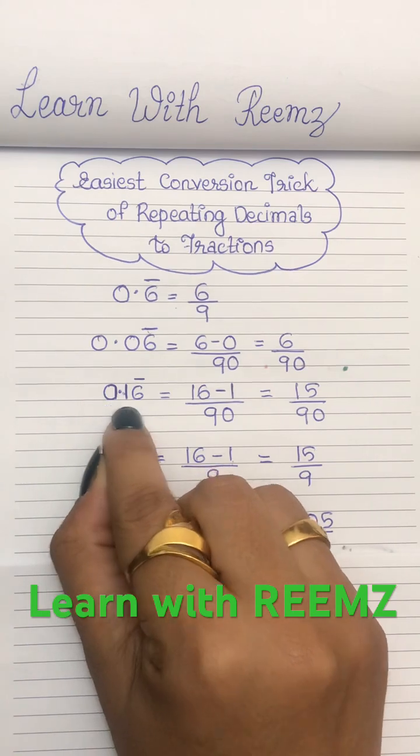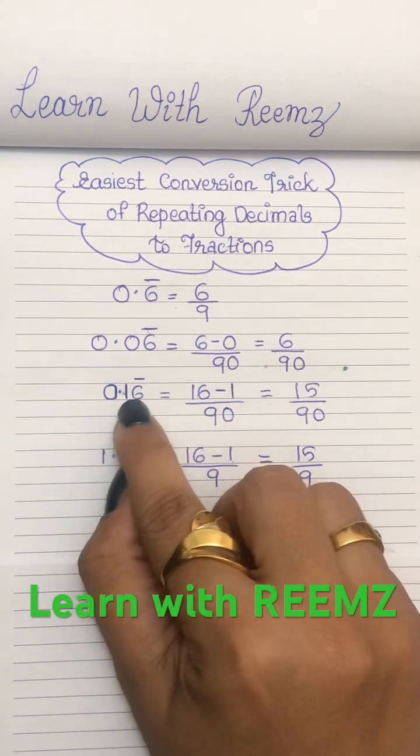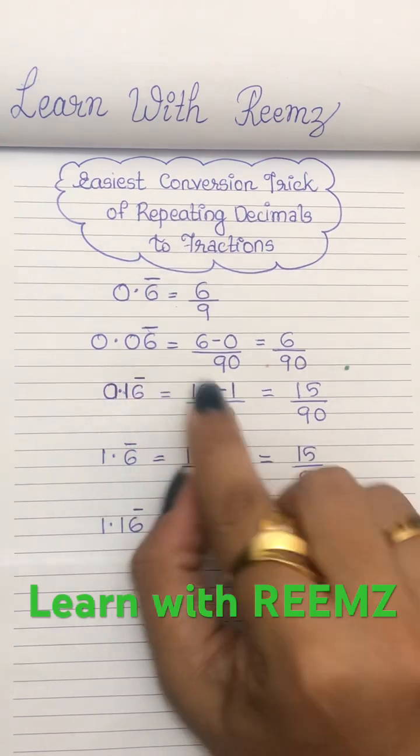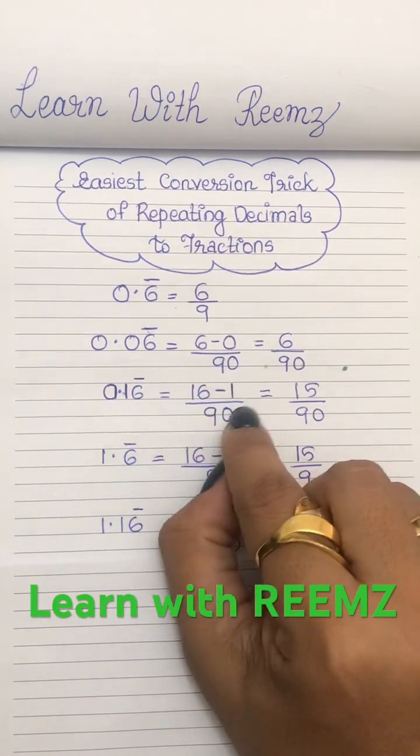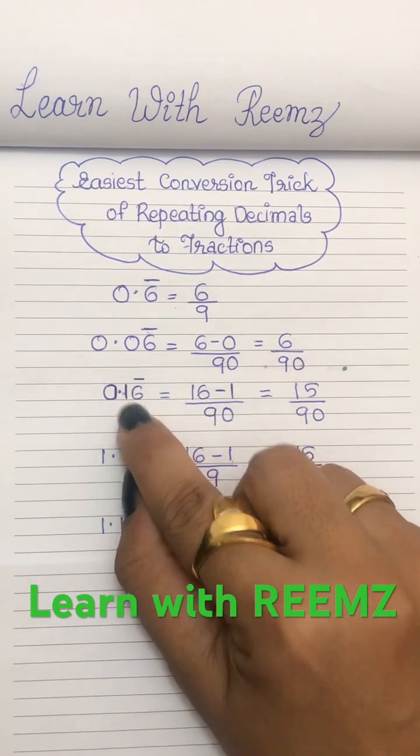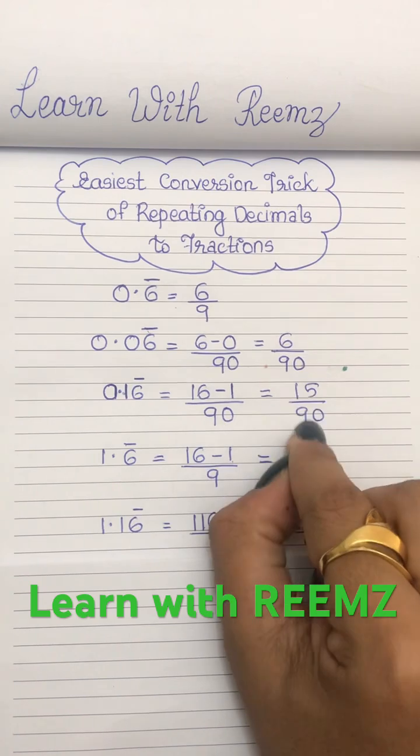The next one is 0.16 bar. So without the decimal point, the number is 16. And covering the repeating term, we have 1. So 16 minus 1 divided by only one repeating term, so 9. And one non-repeating term, we have 0. So 15 by 90.